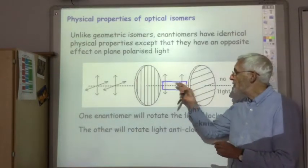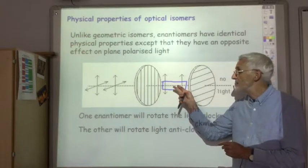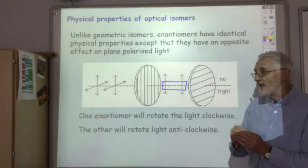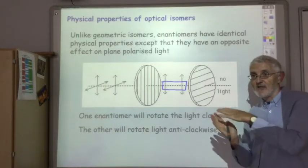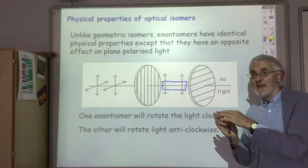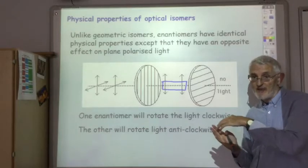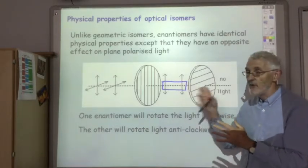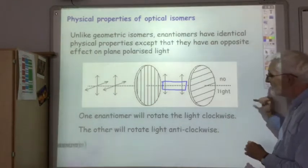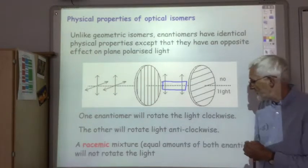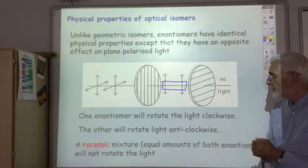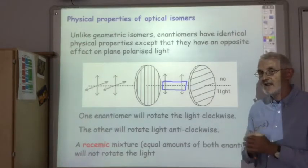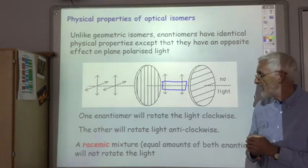If you had an equal amount of both enantiomers in your sample, they would cancel each other out. Some molecules were rotating it clockwise and an equal number were rotating it anti-clockwise, so the net effect would be no effect on the light. And that is known as a racemic mixture — when you have equal amounts of both enantiomers, the net effect is no effect on the light at all.